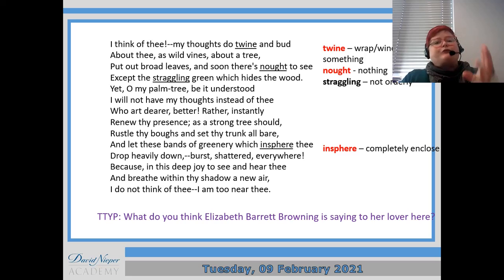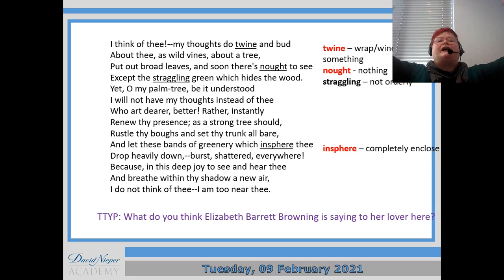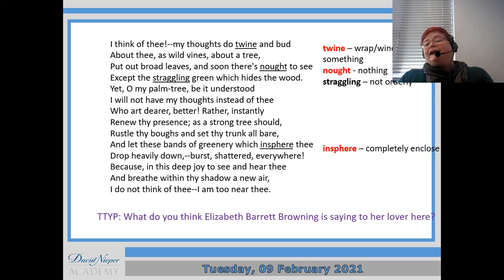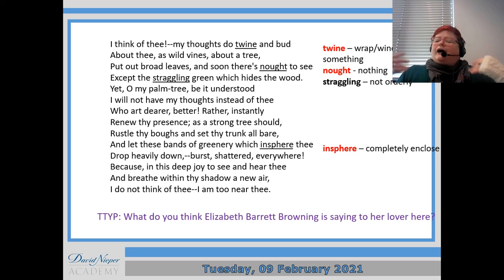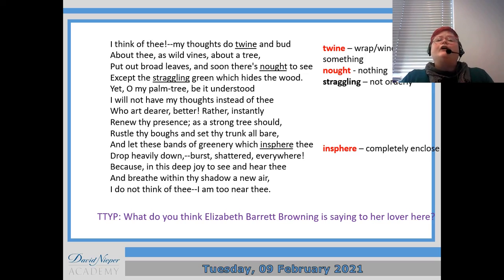'Put out broad leaves' is an imperative — she's telling him what to do. 'And soon there's nought to see except the straggling green' — she's asking him to spread his arms and wrap her body up within him. 'Straggling green' again suggests things are a bit out of control, not quite as groomed or orderly as you might expect. Then it says the green 'hides the wood' — 'wood' here can be a euphemism, perhaps suggesting an erection or a reference to his penis.